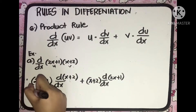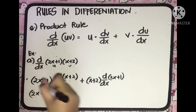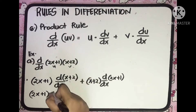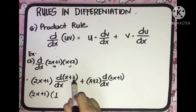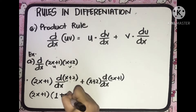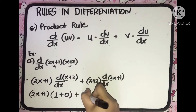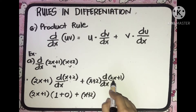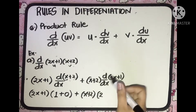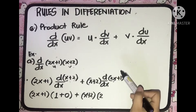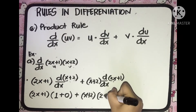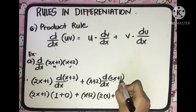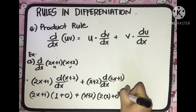Applying the previous rules: we copy 2x plus 1, and the derivative of x with respect to x equals 1, plus the derivative of 2, which is a constant, equals 0 — so 1 plus 0. Then we copy x plus 2, and for the derivative of 2x, we take out the constant 2 and multiply by the derivative of x, which is 1, giving 2 times 1. Plus the derivative of constant 1, which equals 0.